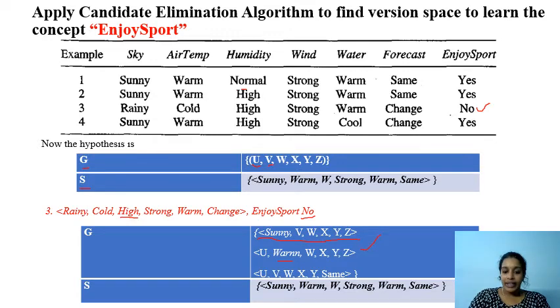And for X, all the values until instance three are strong, so we cannot make changes to this X. Now just check with Y. Y means for all these three instances, the value of Y is warm, so we keep Y as the same.